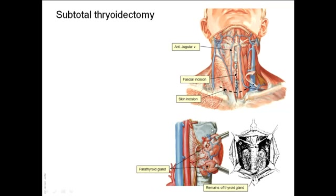The arteries and the veins — all of them are tied. All but the posterior part of the thyroid gland is kept in position because it contains the parathyroid glands, so we ensure that the parathyroid glands are not removed, and to keep a certain amount of thyroid tissue that can maintain the function of the thyroid gland.